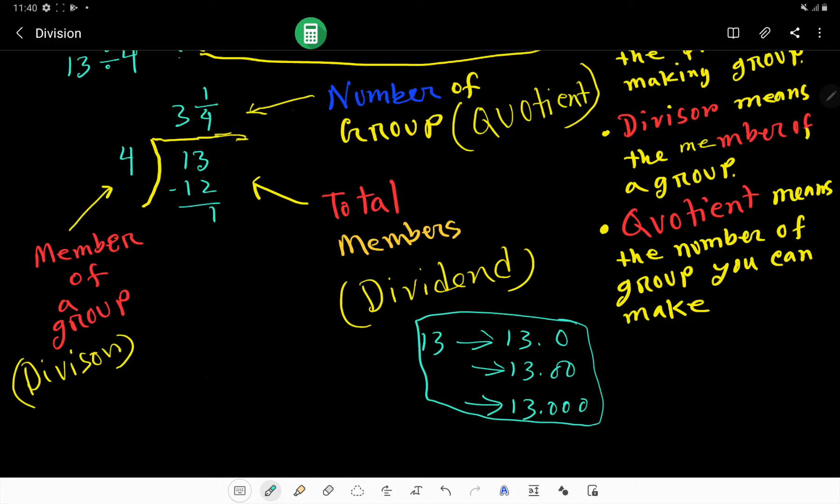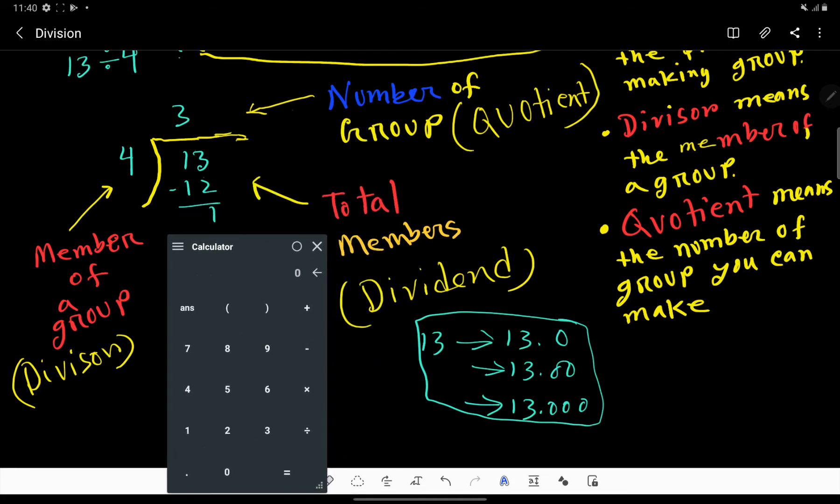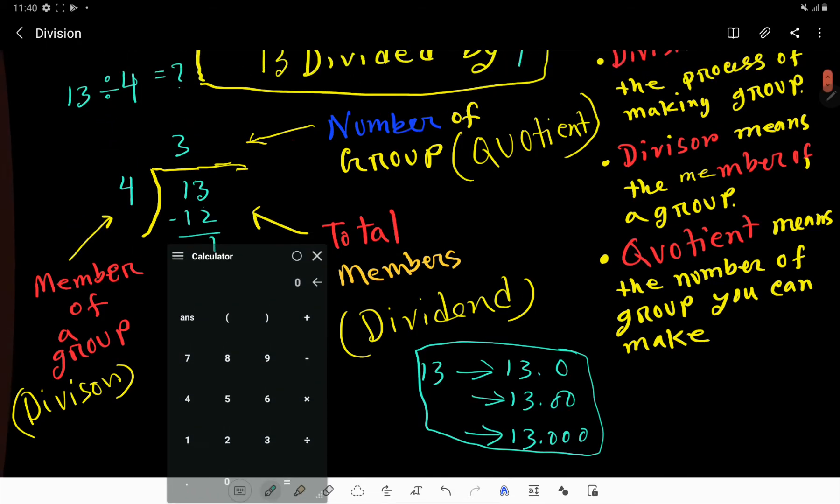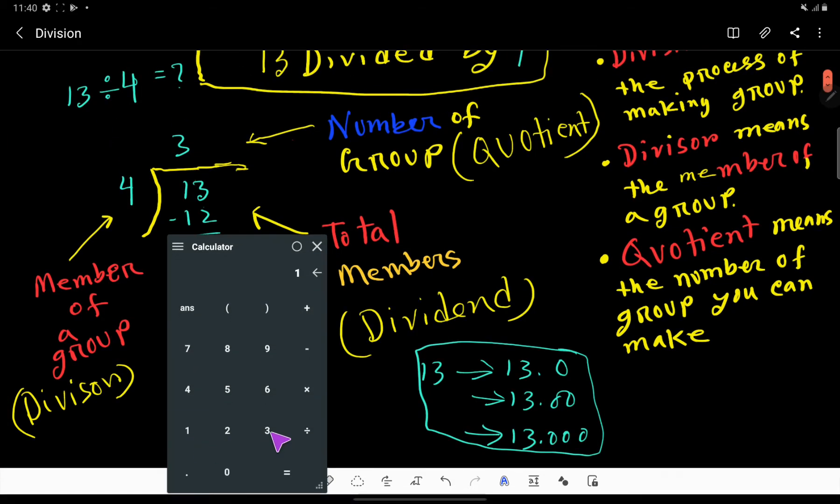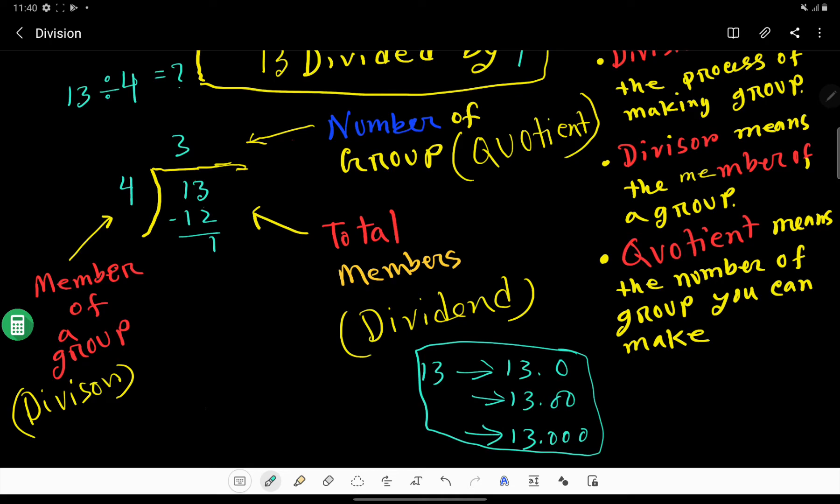Now I will show you how to write the result in decimal number. Let us open the calculator. 13 divided by 4 - you are getting 3.25. How to get this result, 3.25?